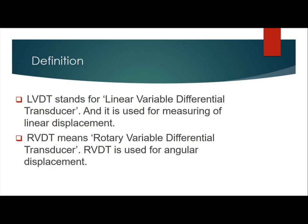LVDT stands for Linear Variable Differential Transducer. L stands for linear because of its measuring of linear displacement. V stands for variable because in the construction of LVDT, we have a movable core, so we call it variable.